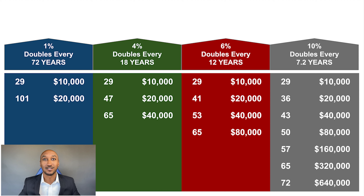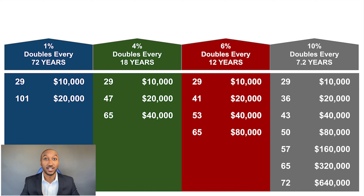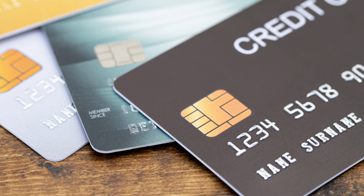As bad as that may look, you have to understand that most people have their money parked in the bank not even earning 1%, meaning a double probably won't happen in their lifetime. Now if we look at the gray area, you can see an example of the same person earning 10%. Ten divided into 72 is 7.2, meaning their money will double around every seven years. So that same $10,000 would have grown to around $640,000 by age 72 — a day and night difference. It's also important to understand these numbers can work for you or against you. A credit card charging 25% means your debt will literally double every two to three years. That's why it's so important to always pay attention to the interest rate you're earning on your money and the interest rate you're paying on your debt.